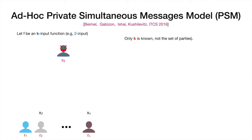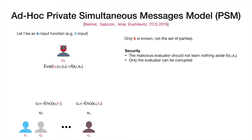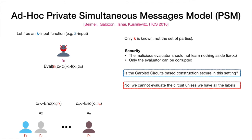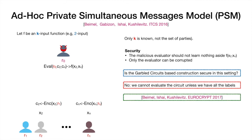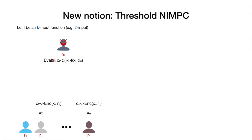Another interesting model is the ad hoc private simultaneous message model. In this model we still have n parties during the setup phase that receive the correlated randomness, but the function the evaluator wants to compute is a k-input function. We do not require all the parties to participate in the online phase — only a subset of parties of size k. What we want is that the honest evaluator can evaluate the output of the function and nothing more than the output itself can be computed. In this notion only the evaluator can be corrupted. The garbled circuit based construction does not help here, because without at least one label per wire we cannot run the evaluation algorithm.